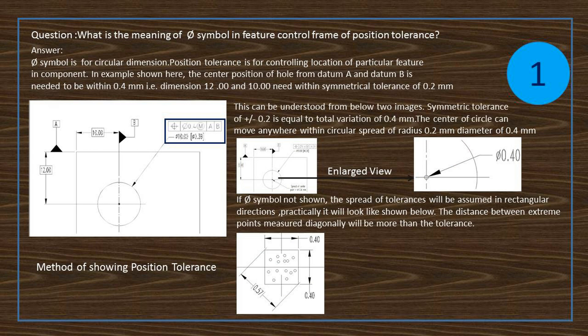This can be understood from below two images. Symmetric tolerance of 0.2 is equal to total variation of 0.4 mm. The center of circle can move anywhere within circular spread of radius 0.2 mm or diameter 0.4 mm.